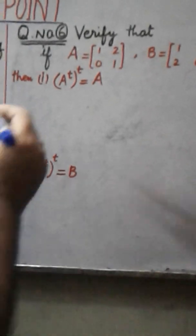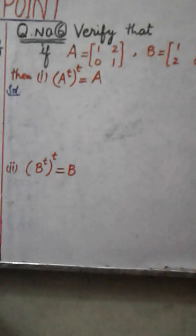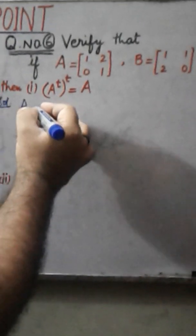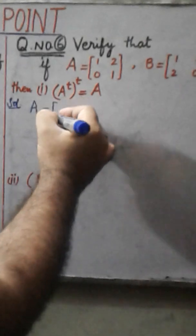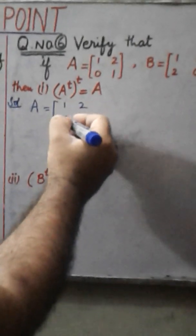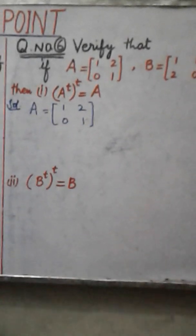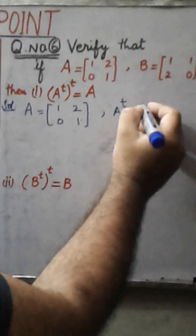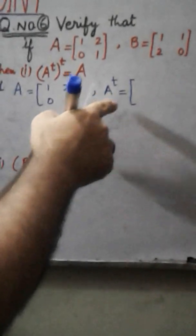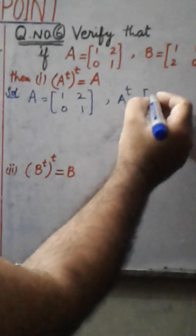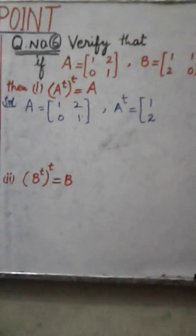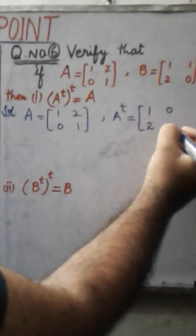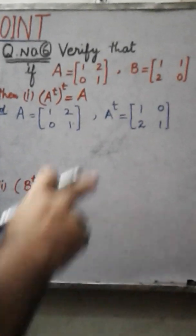First we solve part one. We take matrix A, which is equal to 1, 2, 0, 1. Now we take the transpose of matrix A. To find the transpose of A we interchange the rows into columns — first row 1, 2 is written as a column, and the second row elements 0, 1 are written in column form.